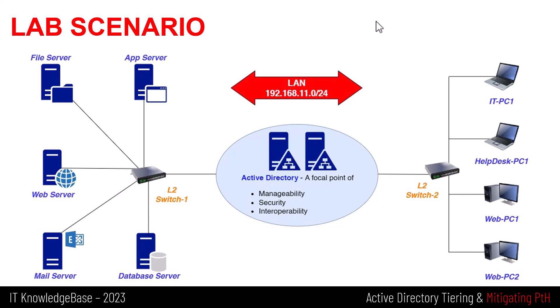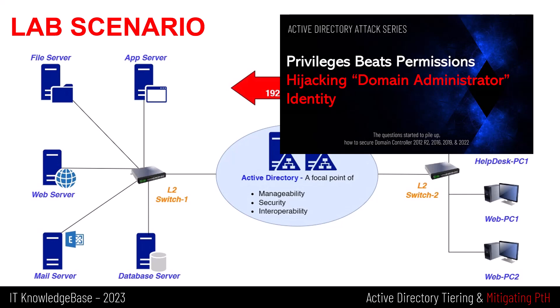It does not matter how secure you design your internal or remote networks, as long as you are using the highest privilege account to log in remotely and manage your lowest privilege workstations or servers. If you have not changed your habit of using domain admins or a single highest privilege account to accomplish jobs remotely across different servers and workstations, then you will be in serious trouble. In my previous video, I demonstrated the domain admin privileges impersonation attack, where typical domain users who only have local PC admin rights can impersonate domain admin privileges because they are using a single account to manage all domain controllers, servers, and workstations.